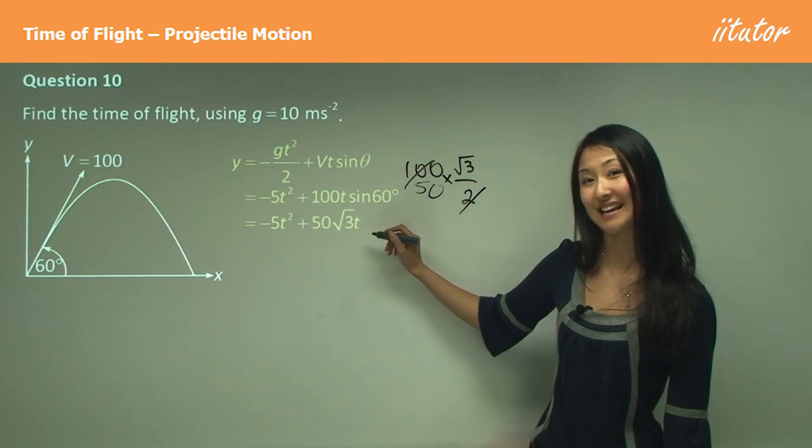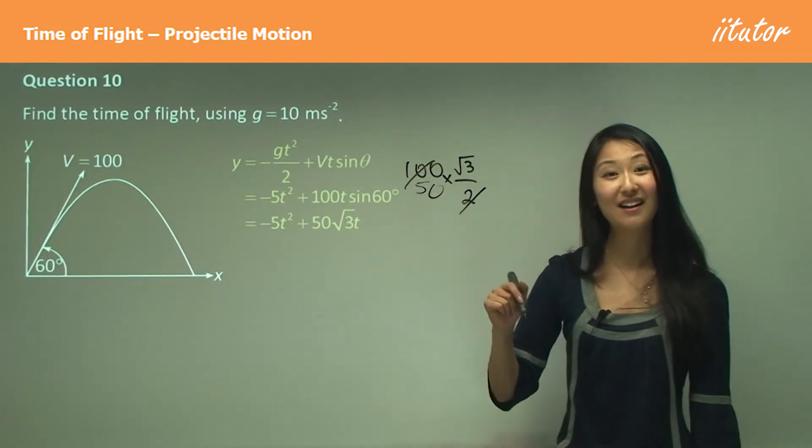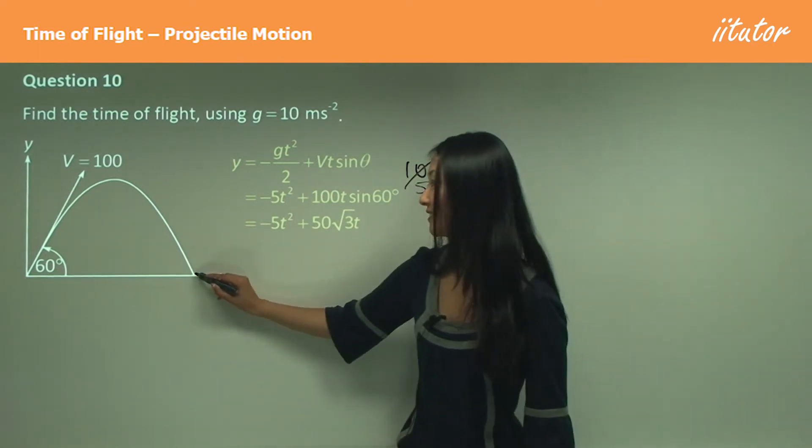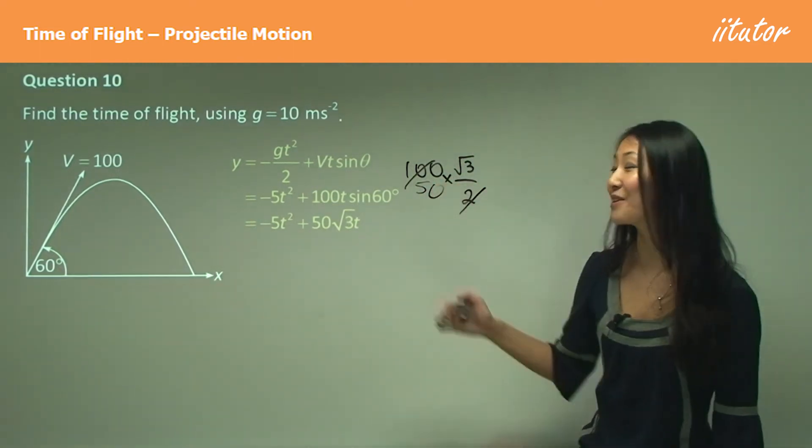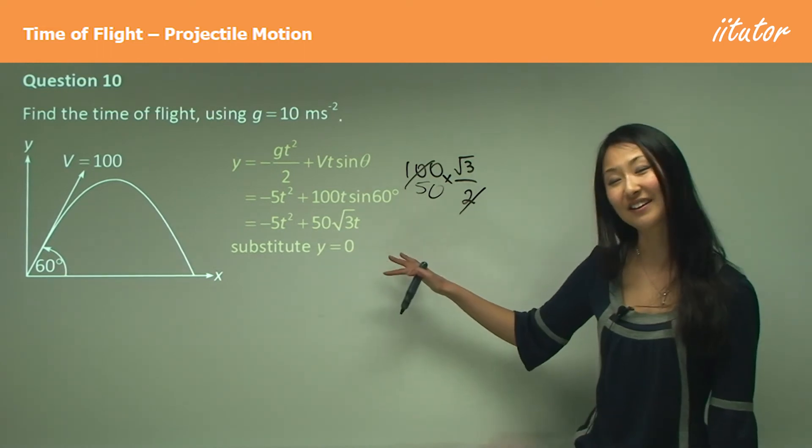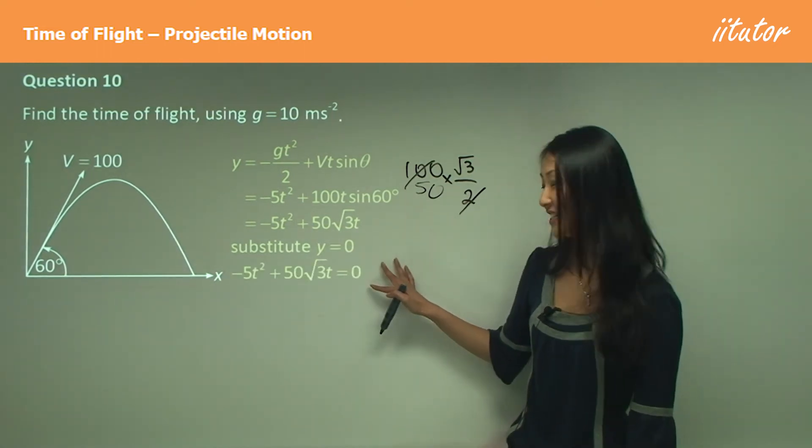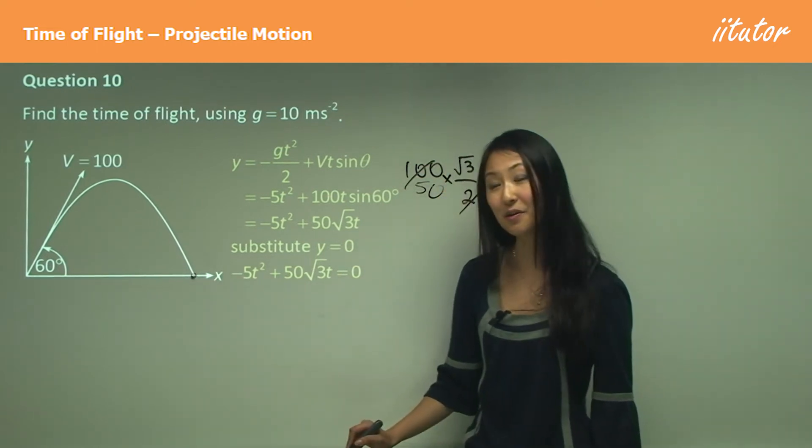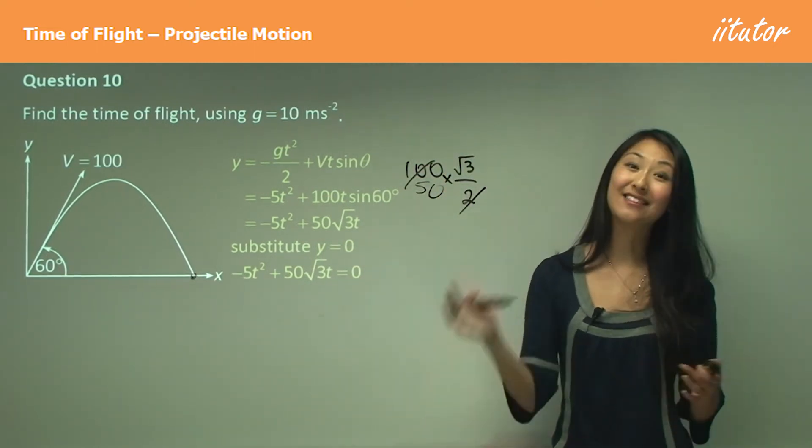Now remember, the point of this time of flight is I end back here when y equals 0. So we make this whole thing equal to 0, and that's how we get this equation here, because we want to work out when y equals 0 again.